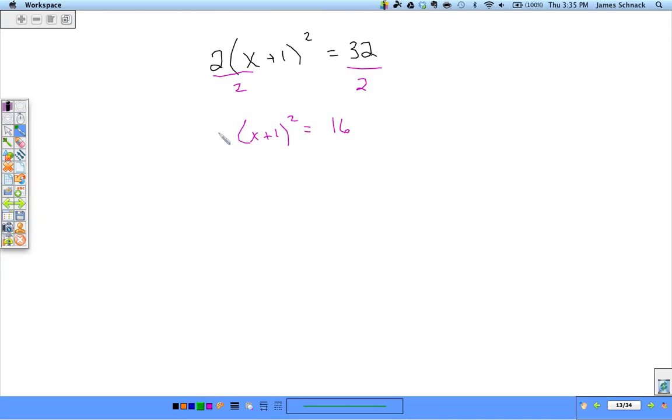How do we get rid of the squared now? Square root both sides. x + 1 = ±4. Subtract 1 from both sides.